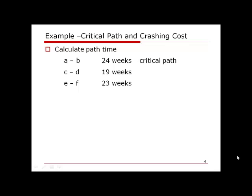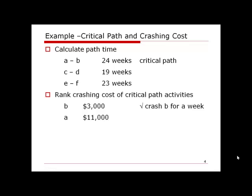We crash one time unit at a time, so we try to crash only one week. We rank the crashing costs of critical path activities: B costs $3,000 for the first week and A costs $11,000. We pick the lowest cost, which is activity B. We crash B for one week at a cost of $3,000 and save $12,000 in weekly project costs, netting $9,000 in savings.